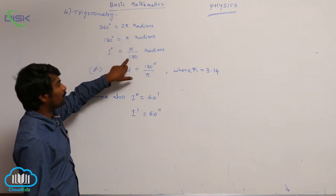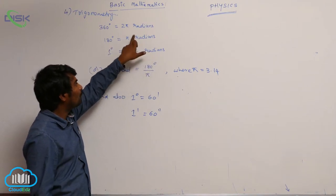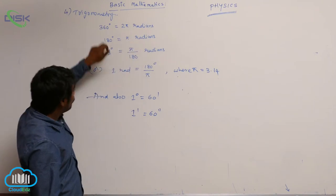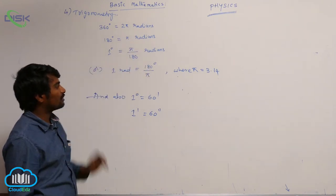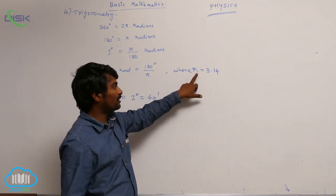1 degree will be π/180 radians, or 1 radian will be 180/π degrees, and the value of π is 22/7.